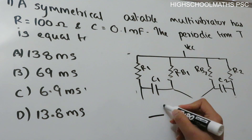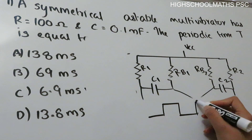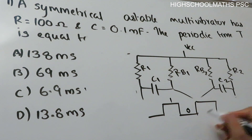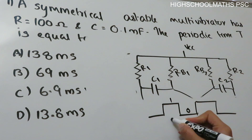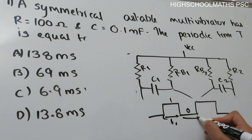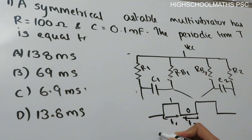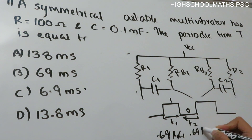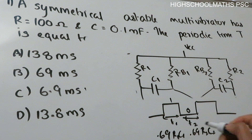Let's take a look at the time period. We have two states. T1 is 0.69 R1 C1, and T2 is 0.69 R2 C2. The total time period T is T1 plus T2.